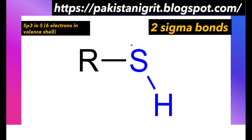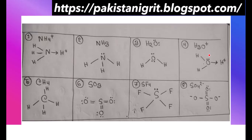Next we will discuss hybridization in sulfur. Sulfur also belongs to the oxygen group in the periodic table and also has six electrons in its valence shell. So likewise, if oxygen forming two sigma bonds gives sp3 hybridization, sulfur forming two sigma bonds will also have sp3 hybridization. Here are some examples.